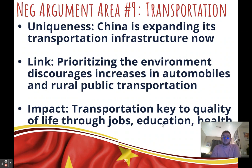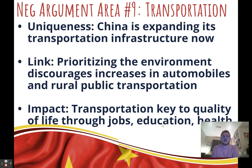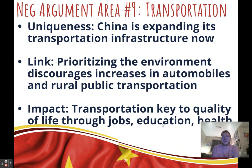Ninth negative argument: transportation. Uniqueness: transportation is an essential part of economic growth, and China is expanding its infrastructure — more roads, bridges, airports, and railways — so people can move more easily, especially from rural areas to urban centers for jobs. Link: when we prioritize the environment, we discourage transportation because it is a major polluter and contributor to global warming, which discourages car ownership and rural public transit expansion. Impact: transportation provides access to higher quality jobs, education, and healthcare.